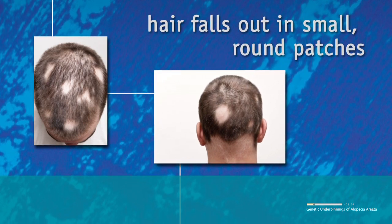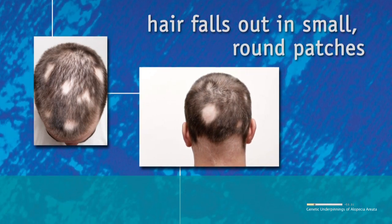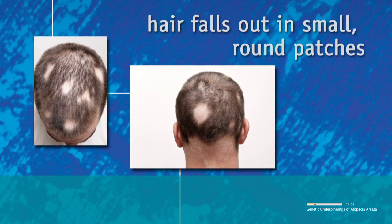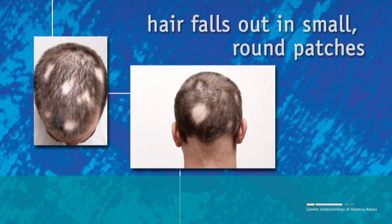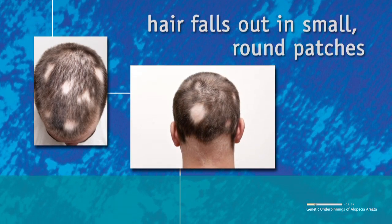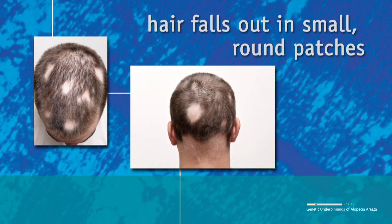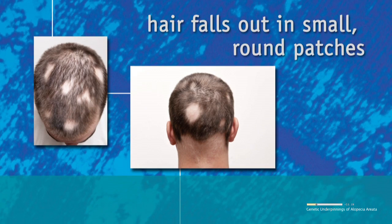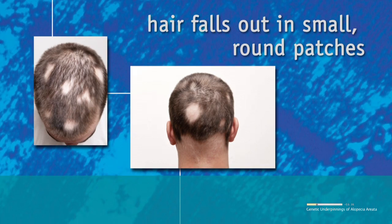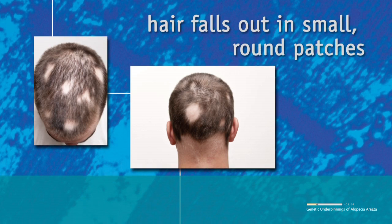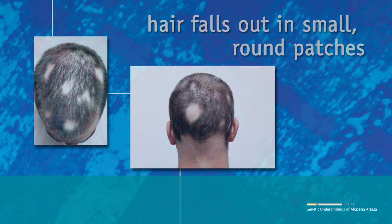In some people, however, hair loss is more extensive. Although uncommon, the disease can progress to cause total loss of hair on the head, referred to as alopecia areata totalis. Complete loss of hair on the head, face, and body is known as alopecia areata universalis.